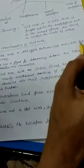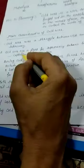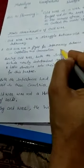Main Characteristics of Cold War. First, Cold War was a struggle between USA and USSR for supremacy. Second, Cold War was a fight for supremacy between two ideologies: capitalism and communism.